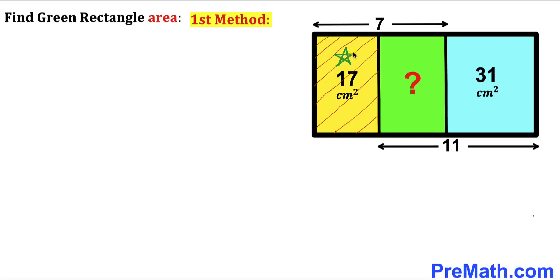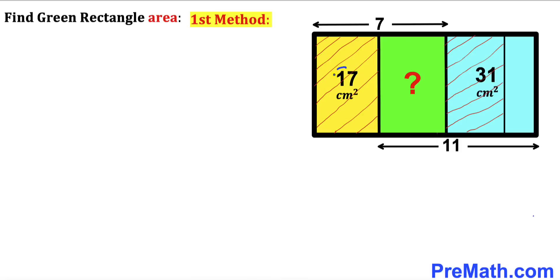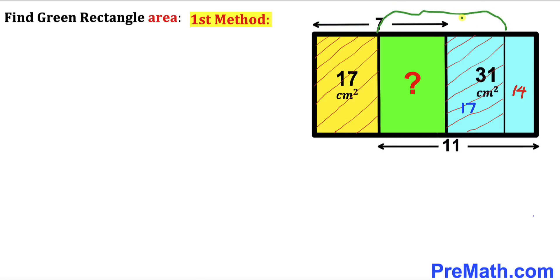Let's focus on this yellow rectangle. I have copied it on the right-hand side. The area of this yellow rectangle is 17 cm². The whole blue rectangle area is 31, and the yellow area is 17, so the leftover area is 14 cm². We can see this distance is 7 cm, and we also know this distance is 11 cm.